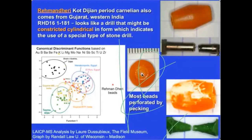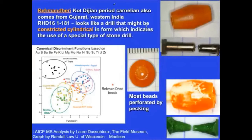Ramanderi, a site in northern Pakistan excavated by Peshawar University, has yielded numerous carnelian and lapis beads. Laser ICP-MS analysis confirmed the carnelian also comes from Gujarat. Importantly, Ramanderi has the earliest evidence for straight cylindrical drilling, indicating use of a specialized stone drill — a constricted cylindrical stone drill — possibly the earliest use of Ernestite drills. Where that drill came from and who developed the technology is still an open question.